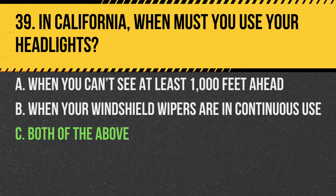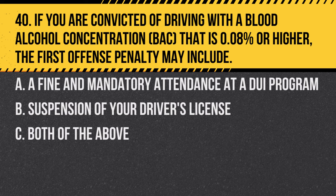Question 40. If you are convicted of driving with a blood alcohol concentration of 0.08% or higher, the first offense penalty may include: a. A fine and mandatory attendance at a DUI program. b. Suspension of your driver's license. c. Both of the above. Answer: c. Both of the above. DUI convictions carry serious penalties, including fines, DUI programs, and license suspension.